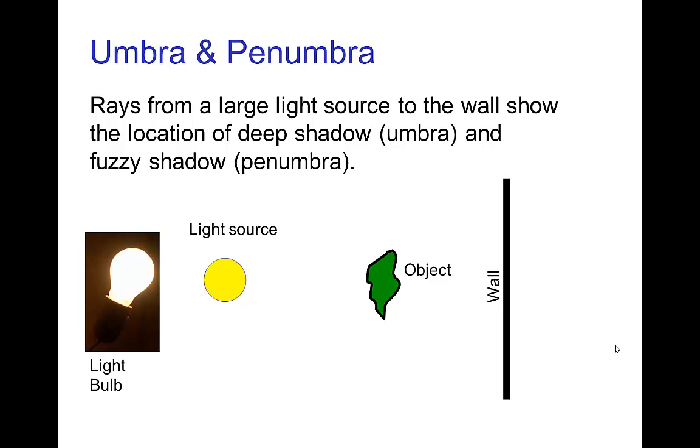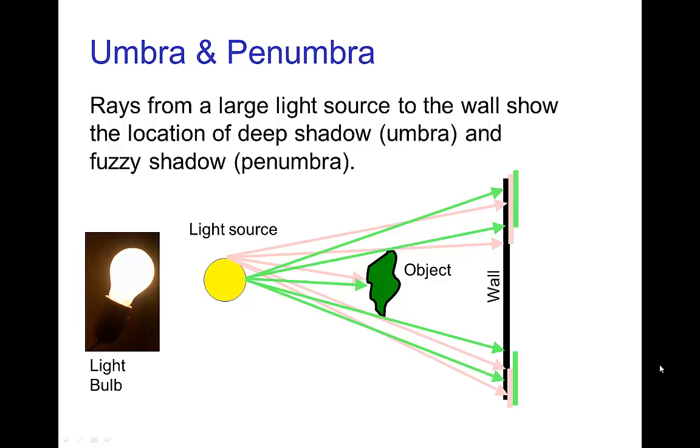For a more general type of light source, say from a light bulb, when we trace out the rays coming from the light source to the wall, we see that the rays from the top of the light source, some of them are blocked by the object, some reach the wall. The light rays from the center of the light source have a different distribution reaching the wall, and the ones from the bottom have yet another distribution.